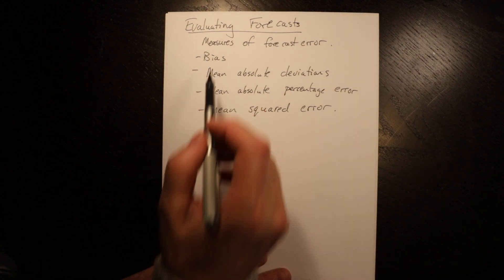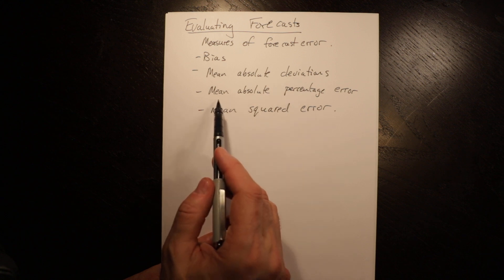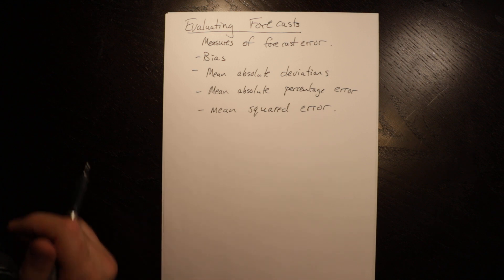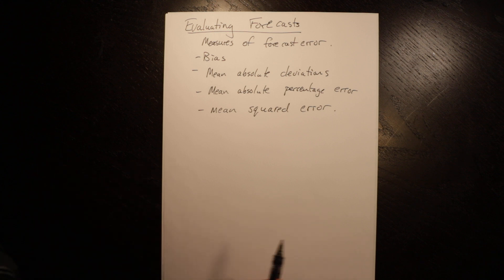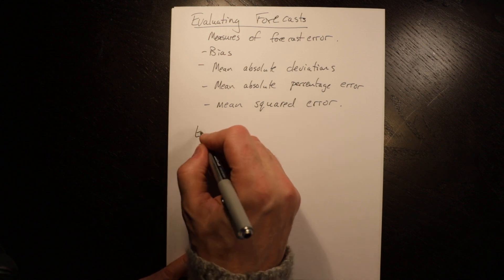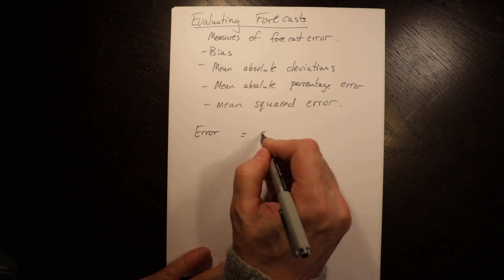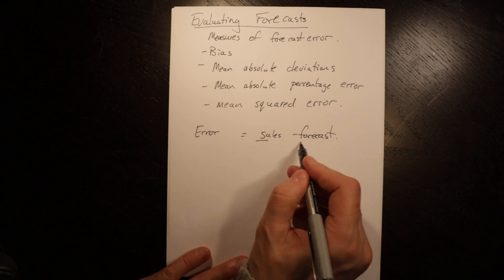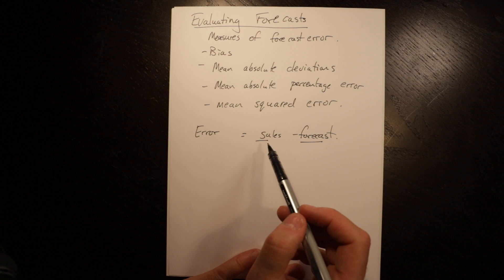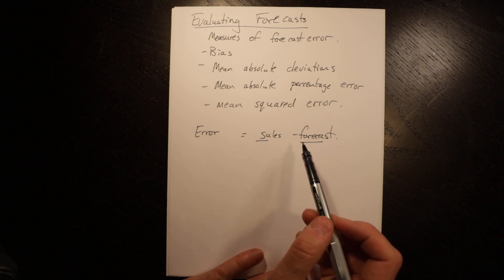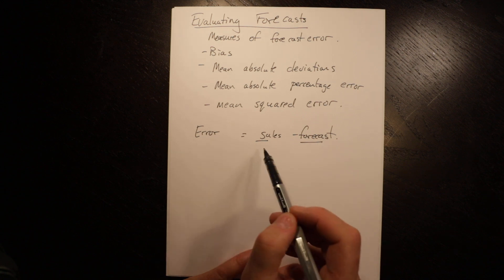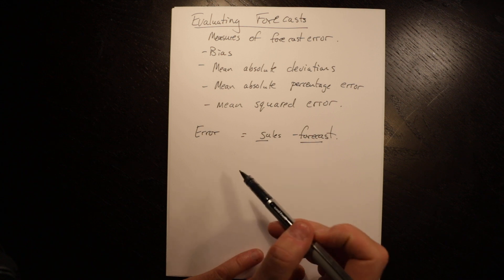We're going to talk about bias, mean absolute deviations, mean absolute percentage error, and mean squared error — all different approaches to evaluating forecasting error. To start, error is equal to sales minus the forecast. So if sales were bigger than the forecast, meaning we under-forecasted, this will be a positive error. And if the error is negative, that means sales were smaller than the forecast.